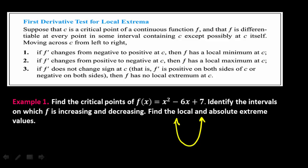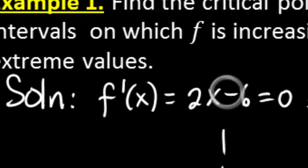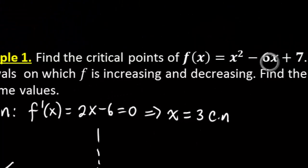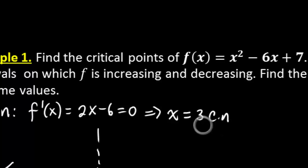So what do we do? We take the first derivative. The derivative of x² - 6x + 7 is 2x - 6. Set it equal to 0, and you see that x = 3 gives us a critical number. To find the critical point, you have to plug 3 into the original function.